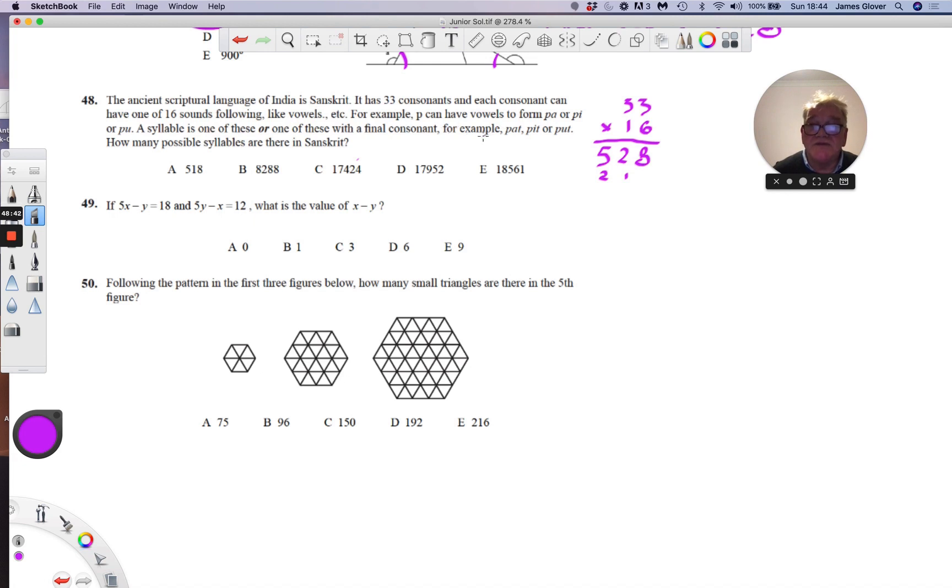Then each of these can have a consonant following, and there are 33 consonants. So we need to take this number and multiply by 33. Again, using vertical and crosswise. Three eights is 24. 24 add six is 30, add two is 32. 15 add six is 21, add three is 24. 15 add two is 17. So there are those possibilities as well.